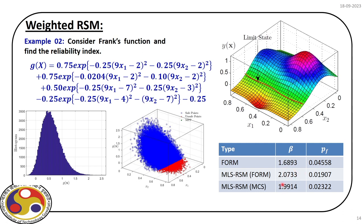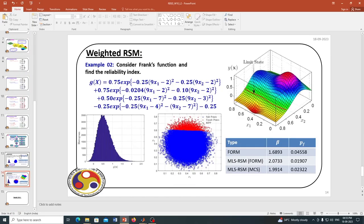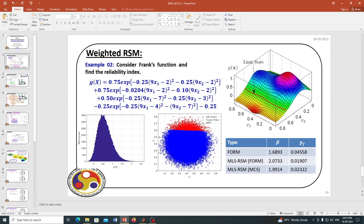There is still some amount of error, and as we progress in this course we will see how to improve these results. The line demarcating the safe and failure regions is visible — red dots represent the failure region and blue dots the safe region. The MPP will be visible once we run the code in MATLAB.